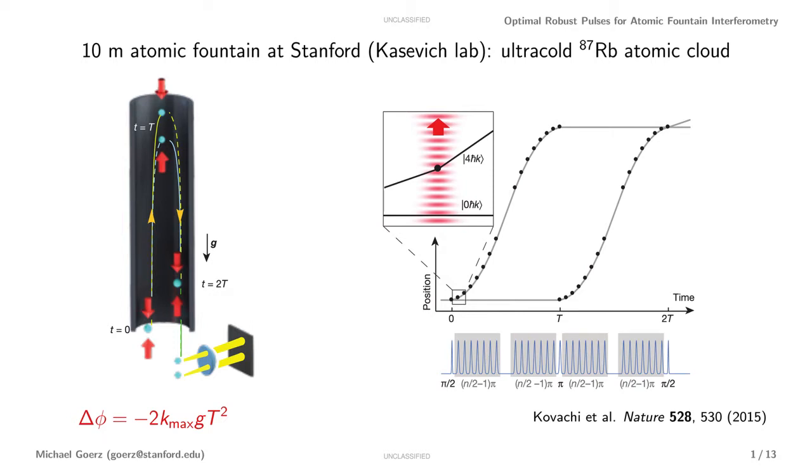Right after launch, we apply a series of pulses that puts the cloud into a superposition of zero momentum and some high momentum states so that the cloud accelerates apart as it travels up. Then at the turning point we apply pulses that reflect the two trajectories and finally at the end we recombine the two trajectories.